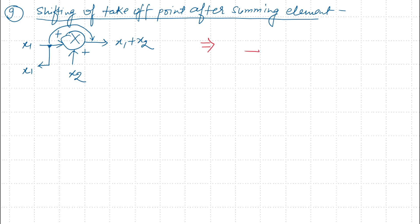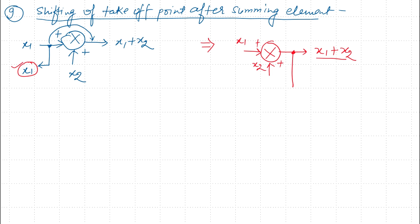In the equivalent diagram, x1 and x2 are added giving output x1 plus x2, and the takeoff point is shifted to this output point. The value of the takeoff point was previously x1, but now it is x1 plus x2. To get the same value, we subtract x2 from the output signal by including another adder where x2 is subtracted, so that x1 plus x2 minus x2 gives x1 — the actual takeoff point value. The rule: shifting a takeoff point after the summing element requires adding another summing element with the opposite sign of x2.